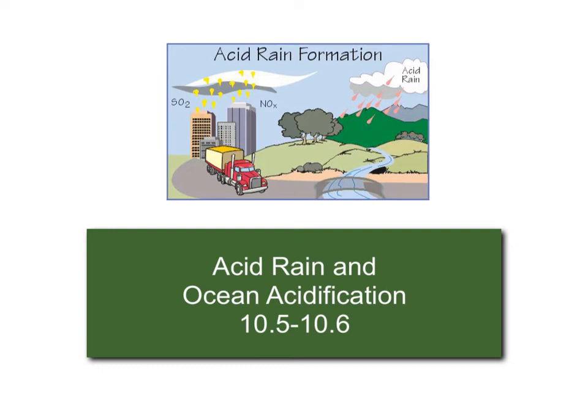Today we're going to wrap up our discussion of acids and bases with just two applications of acid-base chemistry. The first is acid rain, and the second is ocean acidification, which we've already talked about a little bit in class.